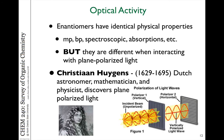Enantiomers actually have identical physical properties. If you take two mirror image isomers, the melting points, boiling points, spectroscopic properties — all of the properties of the molecule are identical except the direction that they rotate plane polarized light when it passes through a sample of those molecules.